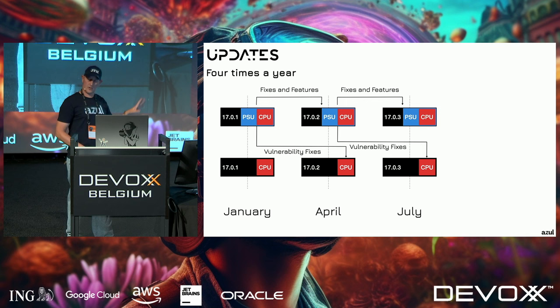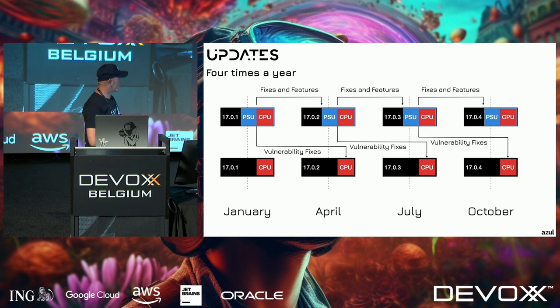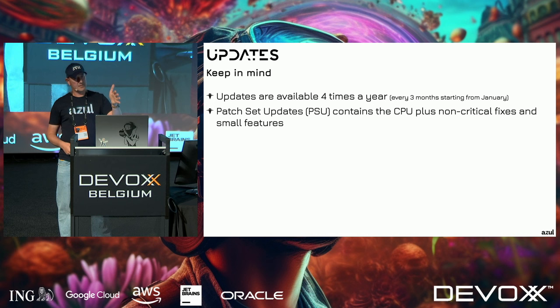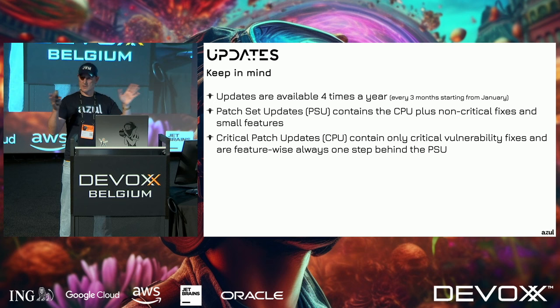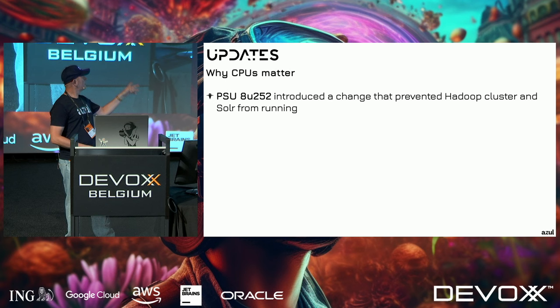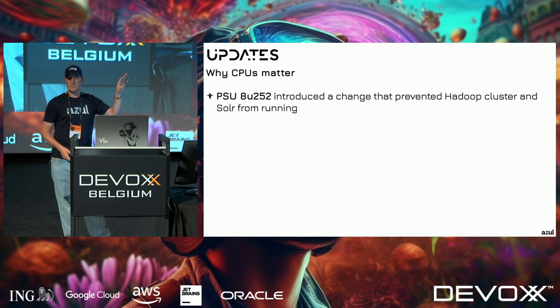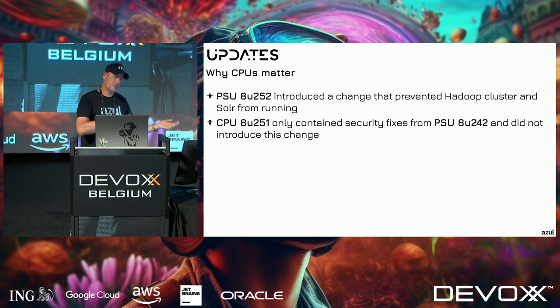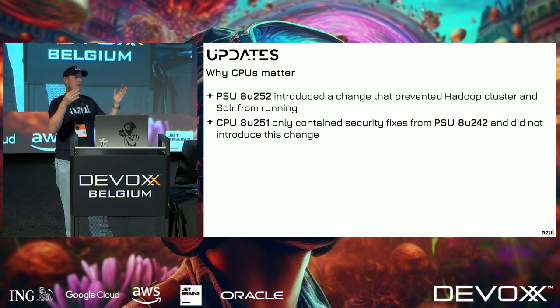Most people don't know about CPU releases because you have to pay for them; only a few companies offer them. Updates are available four times a year. PSU contains the CPU plus additional content; CPU contains only critical fixes. For example, in JDK 8 update 250/252, a PSU introduced a feature that prevented Hadoop clusters and Solr from running — using the CPU update instead (which contained only fixes from 242) avoided the problem.